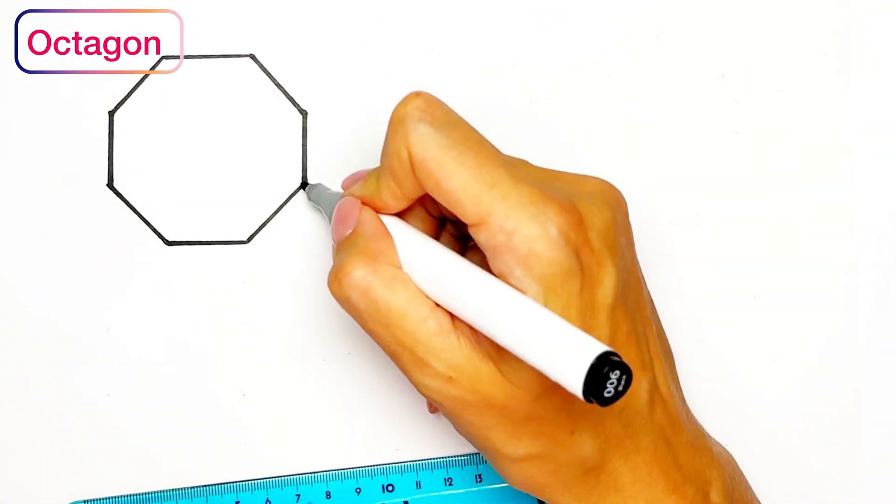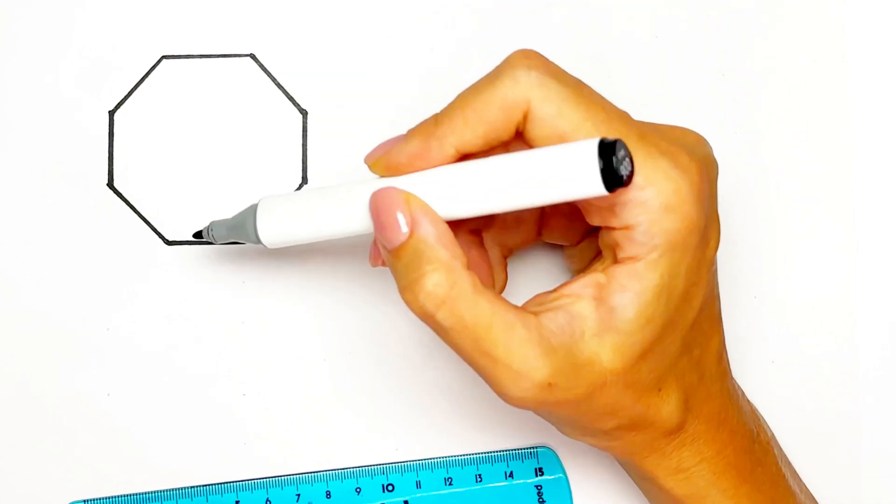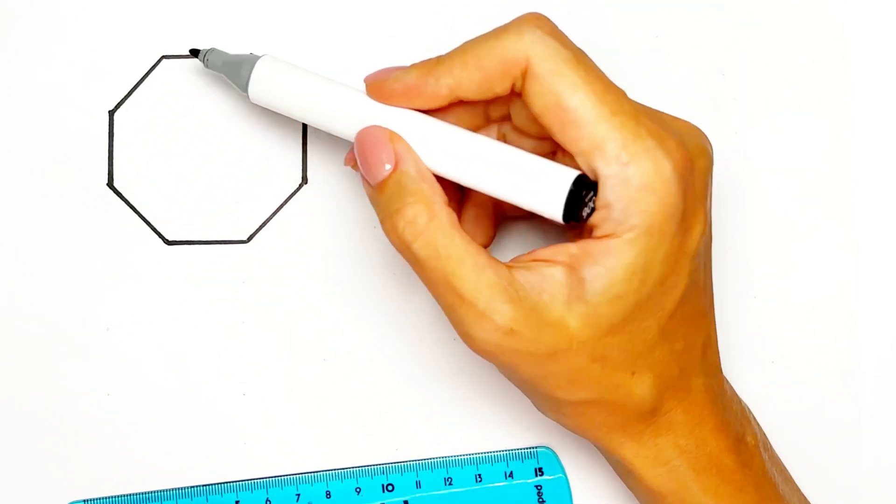Octagon has eight angles. One, two, three, four, five, six, seven, eight. Eight angles.